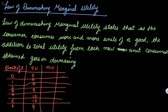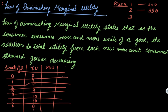What does this mean? Let us take an example of pizza. You had one pizza and obtained a utility of, let's say, 200 utils. You ordered a second pizza — now consuming two units — and obtained a utility of 350. At the third pizza, you obtained a utility of 450. So your total utility is increasing, but it is increasing at a decreasing rate.